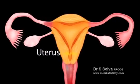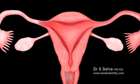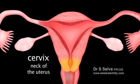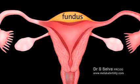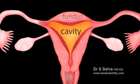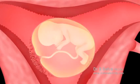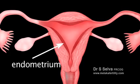The uterus or womb is a hollow pear-shaped organ with a thick muscular wall. It is subdivided into two parts: the corpus or body of the uterus and the cervix or neck of the uterus. The corpus comprises the fundus, which is the top portion of the uterus, and the cavity of the uterus. The cavity is where the embryo and fetus develops during pregnancy. The inner layer or the lining of the uterus is called the endometrium.